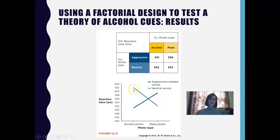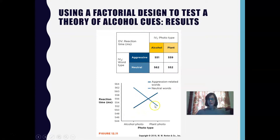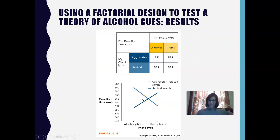Another way we can look at this is to graph our data. With an alcohol photo, you can see a huge difference between identifying aggressive words versus neutral words. That effect crosses over once you switch to a plant — they're actually faster for neutral words than aggression words. What you are looking at here is called a crossover interaction: the identification of aggressive versus neutral words changes depending on the photo type. Here's a quick hint — if these two lines are not parallel, there's definitely an interaction. You can very clearly see this because the lines actually cross over. We call this a crossover interaction.